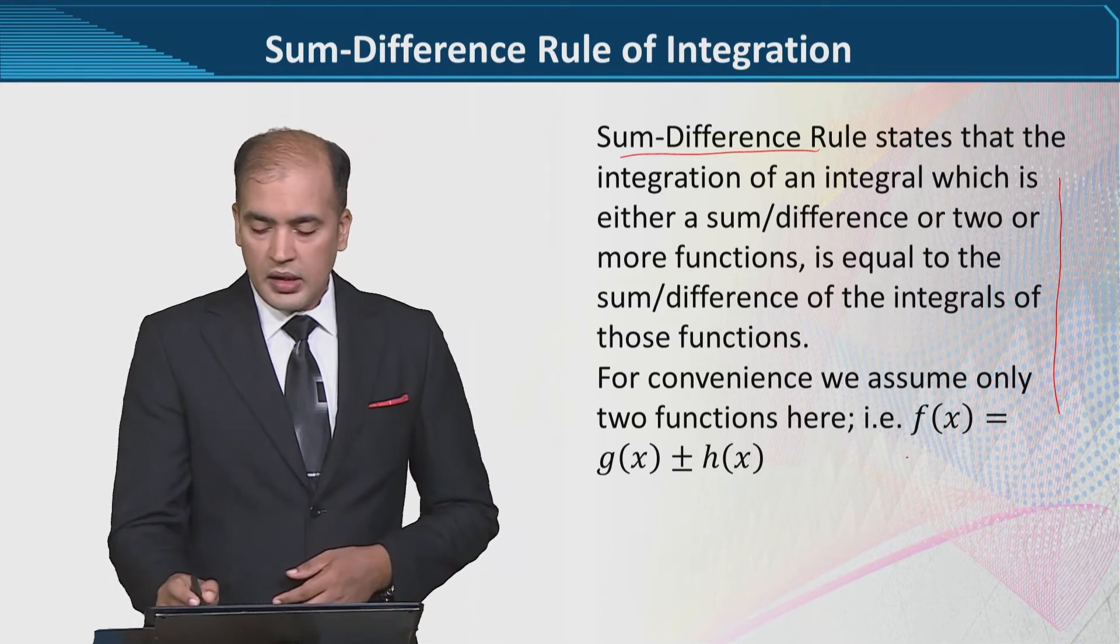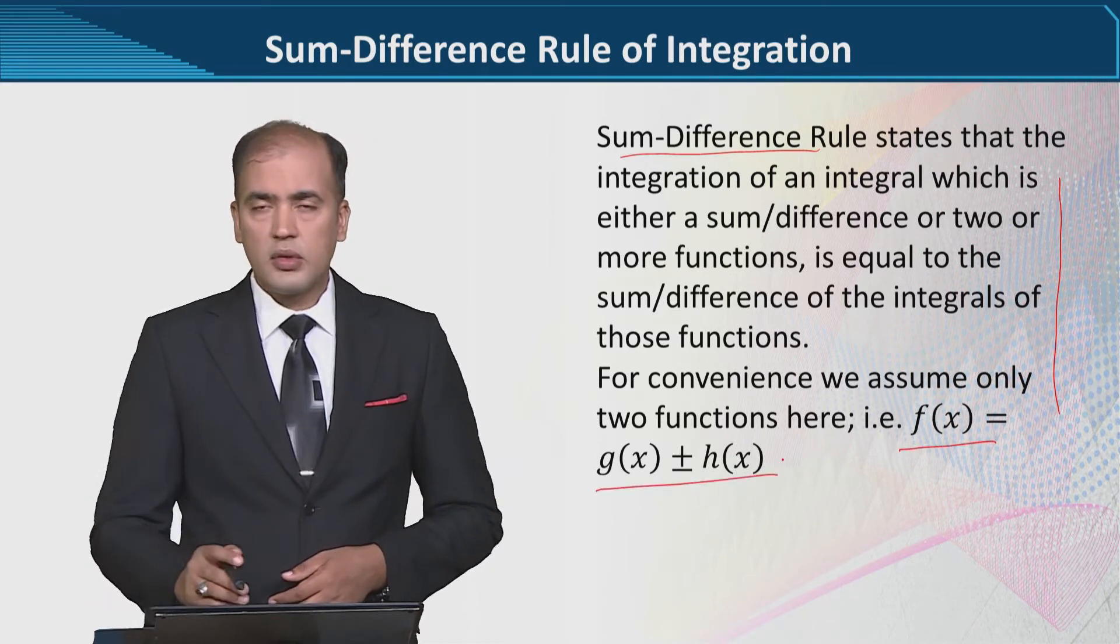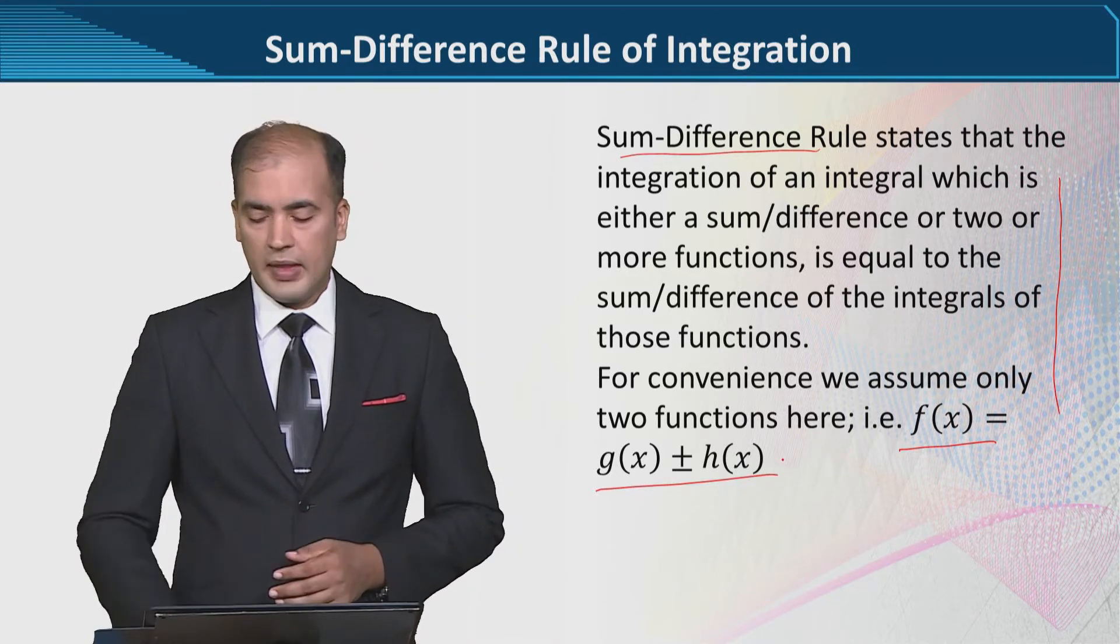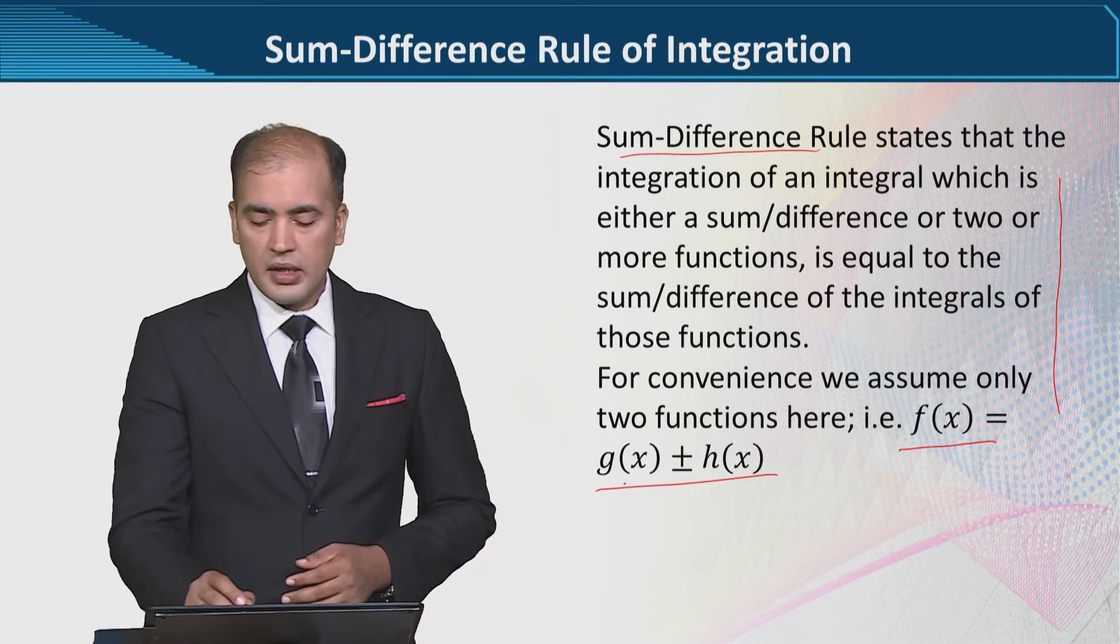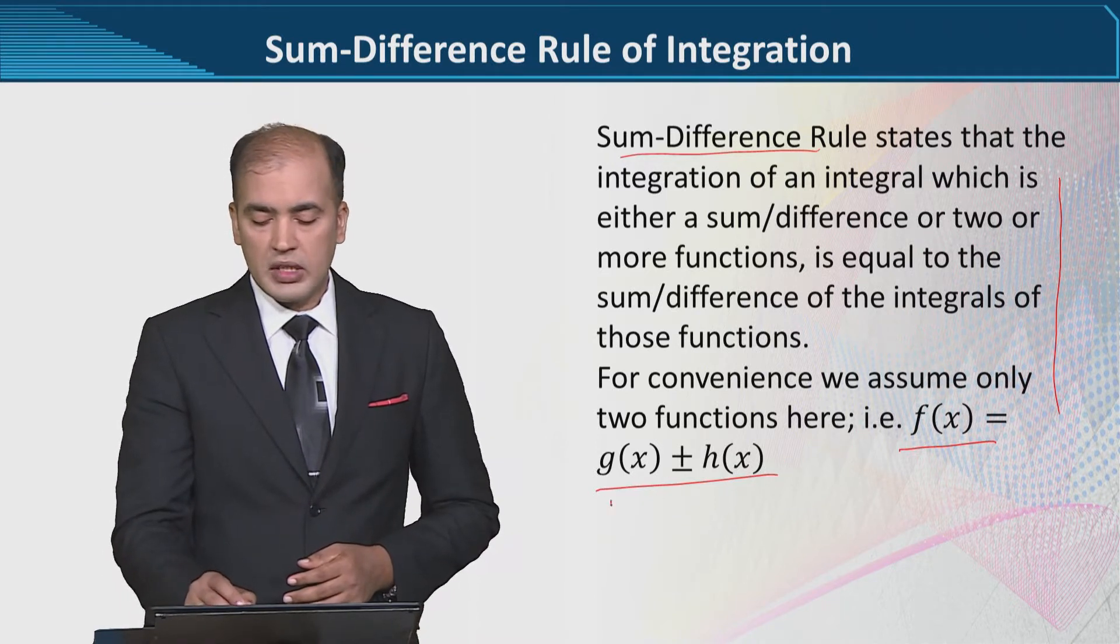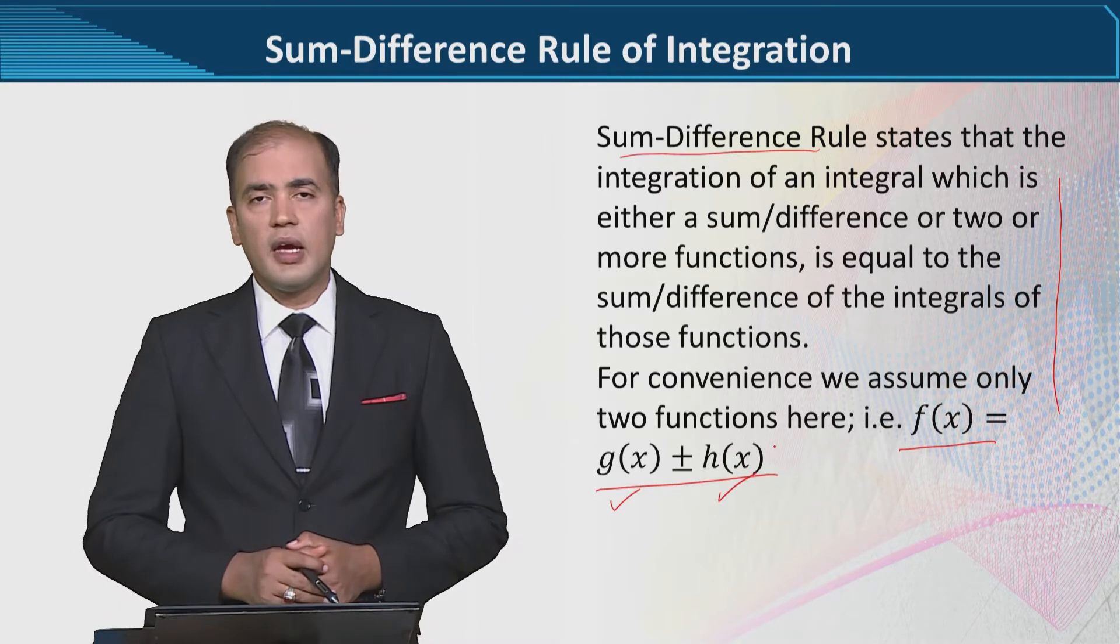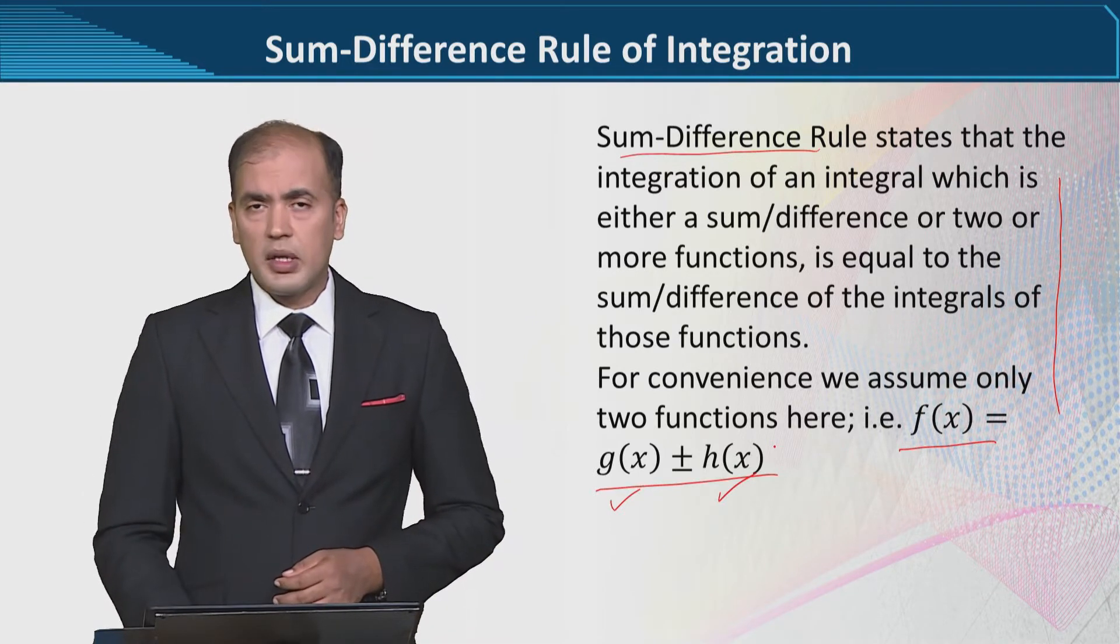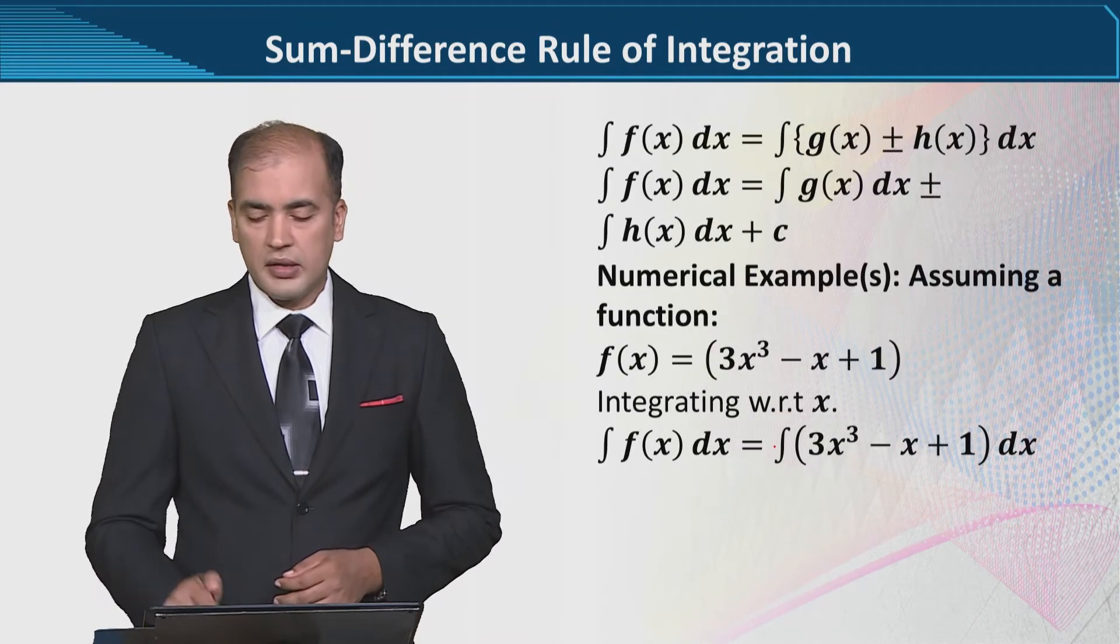This is a function that is a sum or difference between possibilities. That is, f of x is a sum or difference of these two functions, g of x and h of x. Now, this was a symbolical way of writing the things.